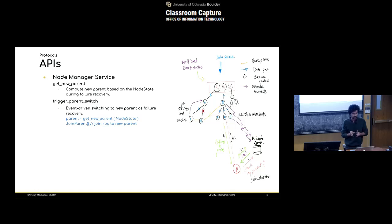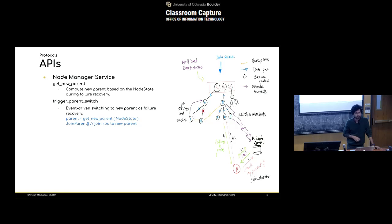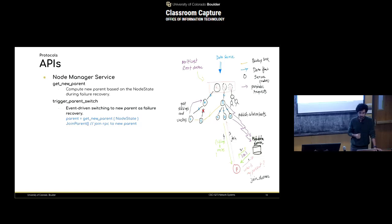Get new parent takes the siblings and uncle state and computes what the next parent should be. The trigger parent switch is the event-driven part — the event could be a disruption in flow, like the application server detecting that the upstream connection has died. In that case it sends an event to the cluster manager service to do a parent switch. The cluster manager wakes up, computes the new parent, and then sends a join parent request. That summarizes the failure handling.